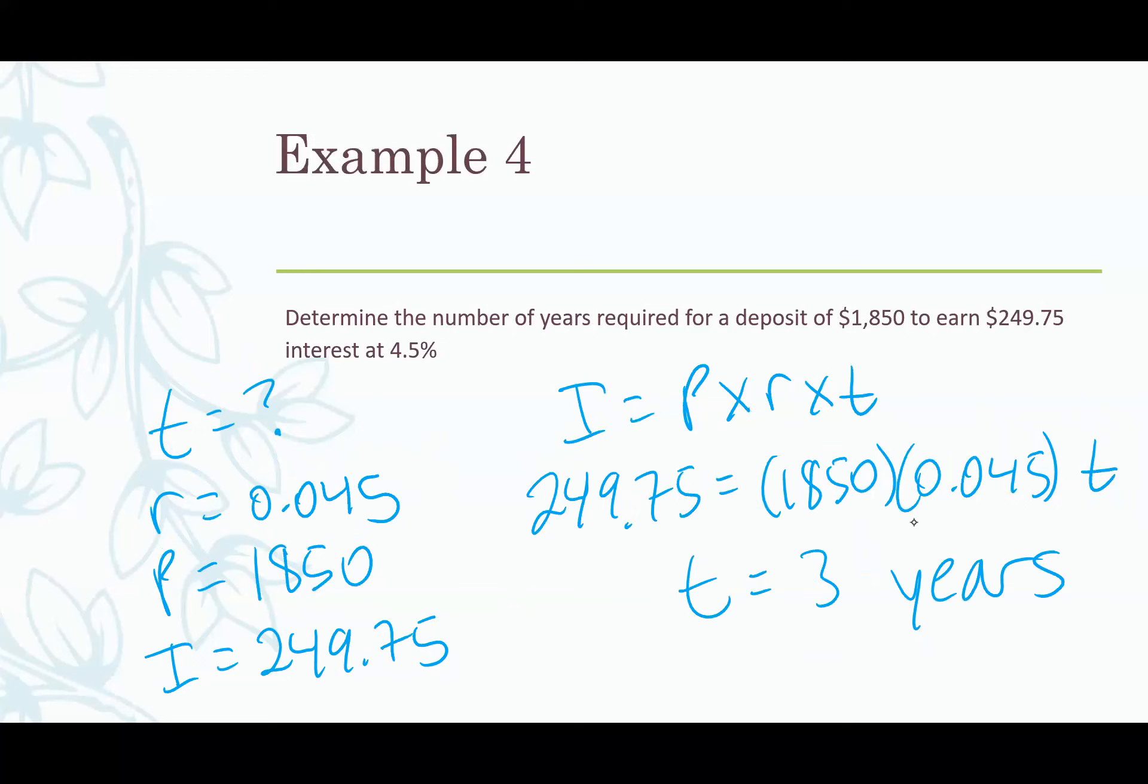I think this is the last example. We want to determine the number of years required for a deposit of $1,850 to earn $249.75 interest at 4.5%. Write down what we know. We know that the interest rate is 4.5%, so it's written as 0.045. We know that the original deposit or the original amount of money is $1,850. That's our principal. And then the interest that we're given is $249.75. What we don't know is how many years this takes. So t is our unknown.